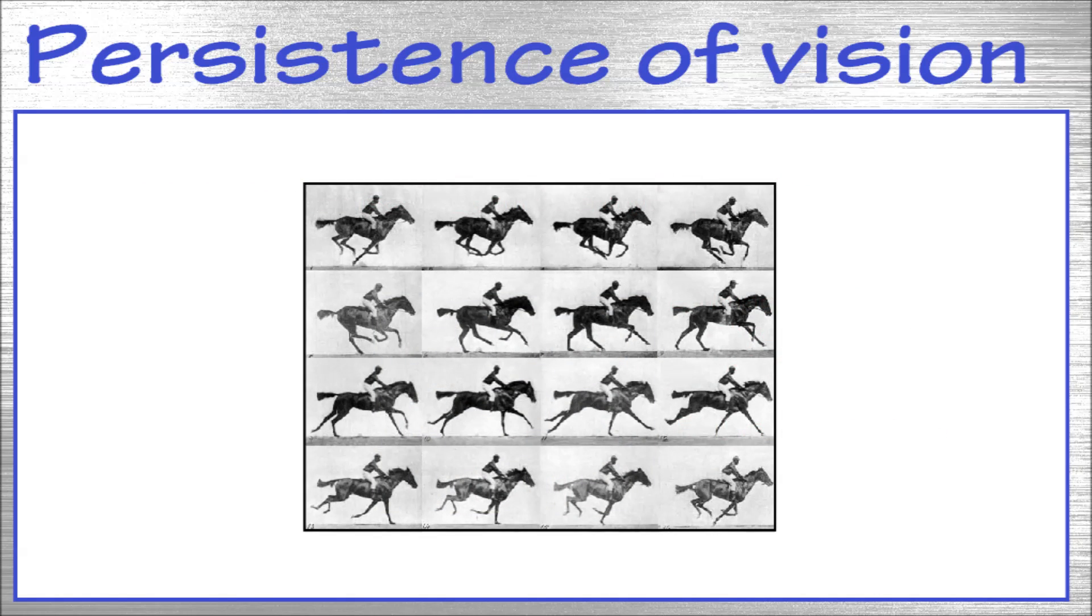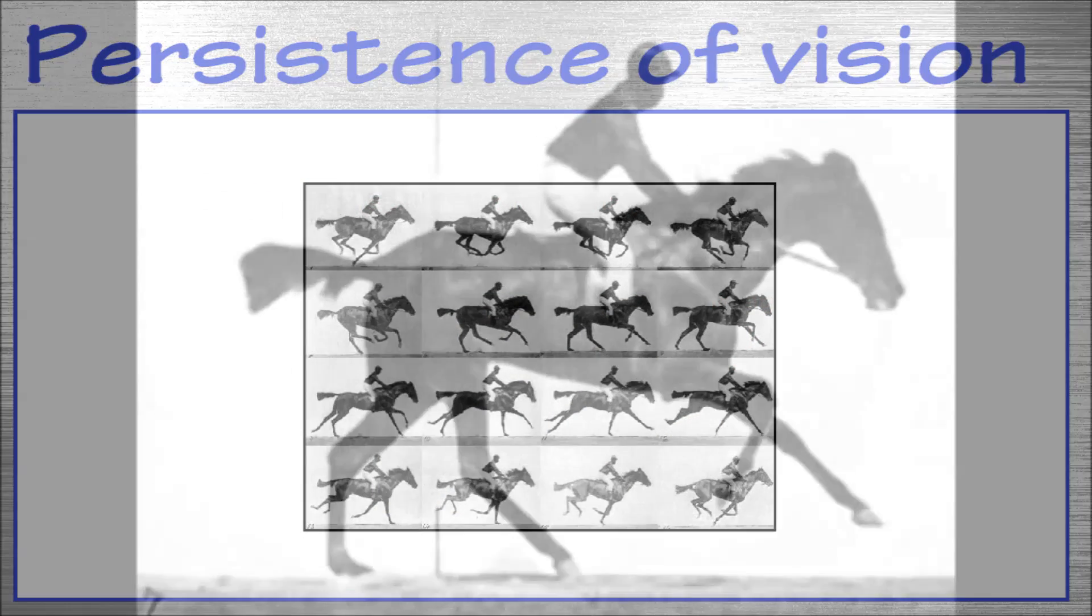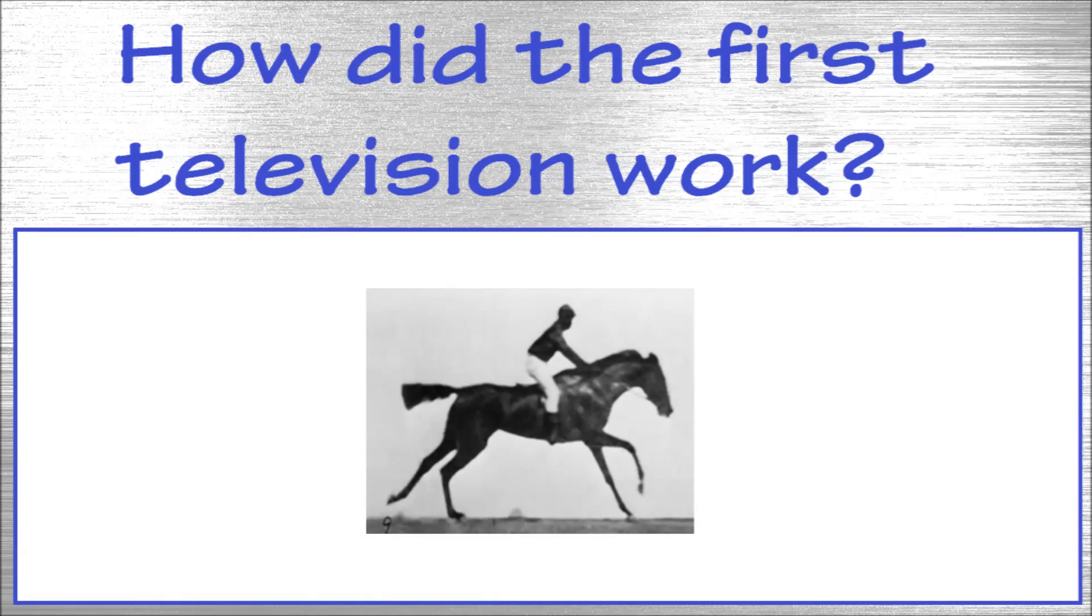Another fine example is the running horse. When the pictures are played fast enough, we can see a running horse instead of the separate pictures. So now we know that if something is changed quick enough, the eye will blend the images together.